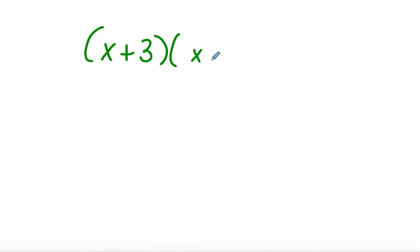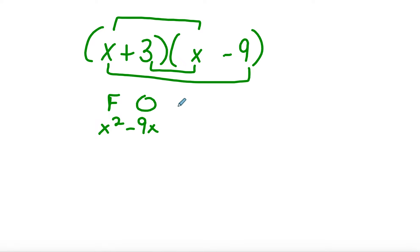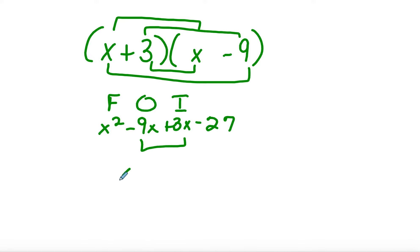Try this one: (x + 3)(x − 9). First times first gives x², outer times outer gives −9x, inner times inner gives 3x, and last times last gives −27. We combine like terms to get x² − 6x − 27.